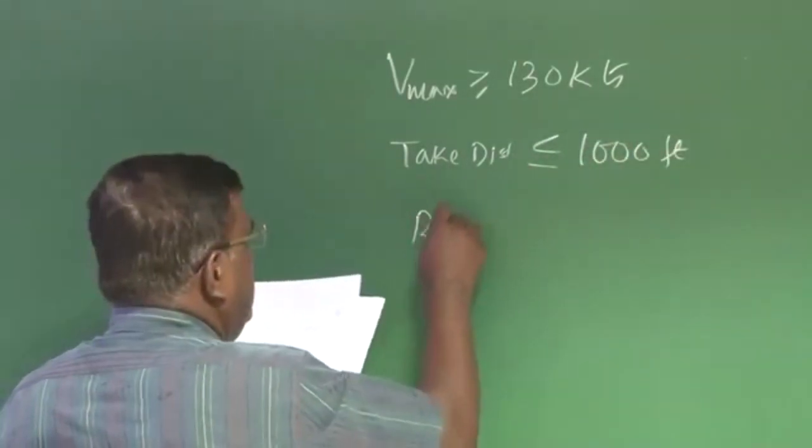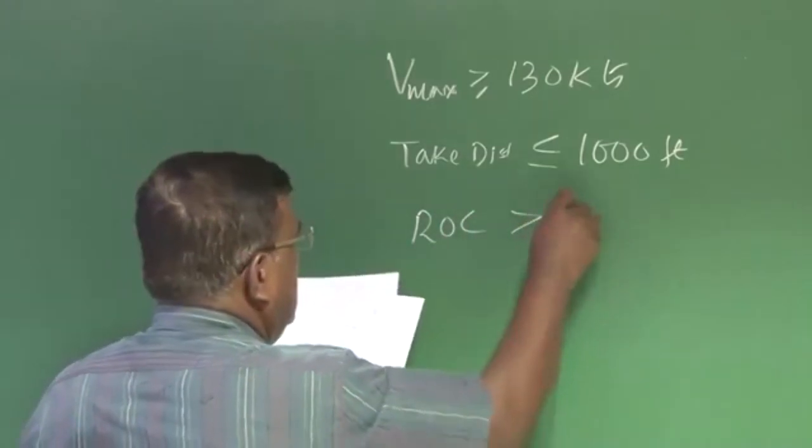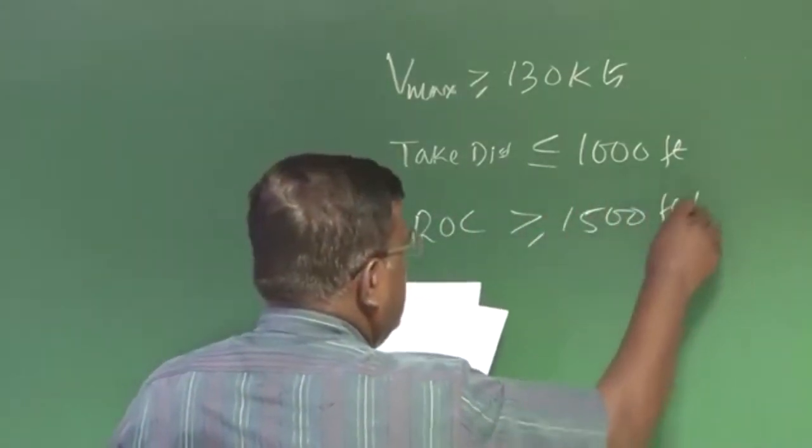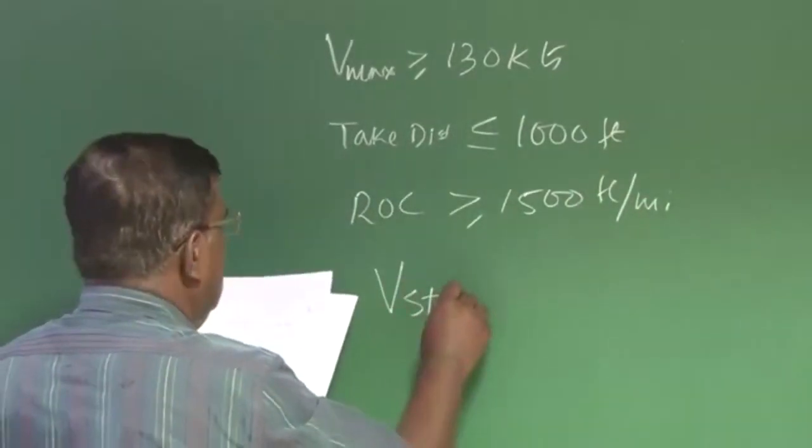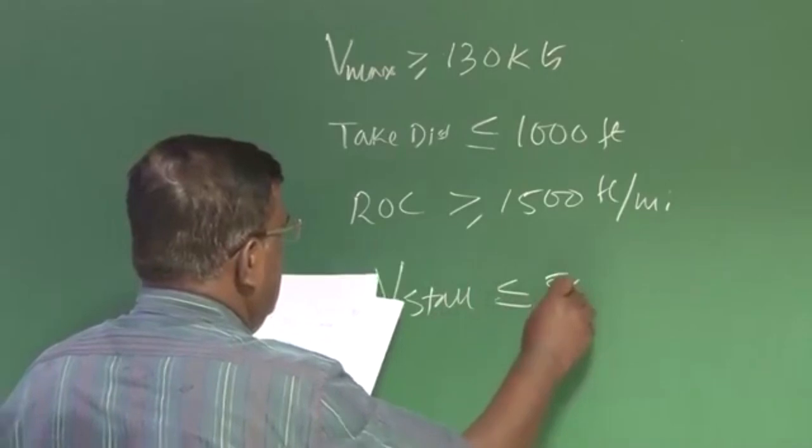Then rate of climb greater than 1500 feet per minute, and of course V stall less than or equal to 50 knots.